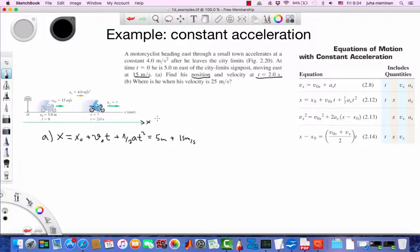Time elapsed is 2 seconds. Half times acceleration, that's 4 meters per second squared times 2 seconds squared. With a little help from a calculator, or you can do it in your head, we get 43 meters. So we are 43 meters from the signpost at 2 seconds.